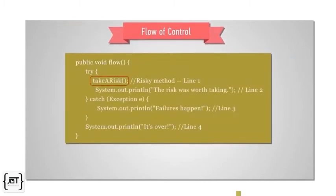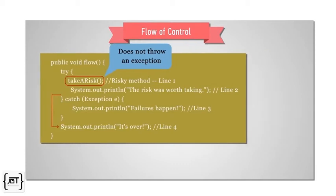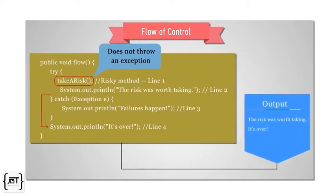When take a risk method is called and it does not throw an exception, code in the catch block never runs. After the try block is over, the code below the catch block runs. Line 2 and line 4 will be printed as output.